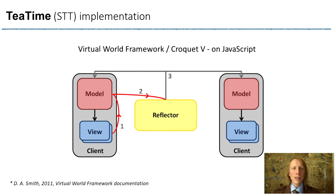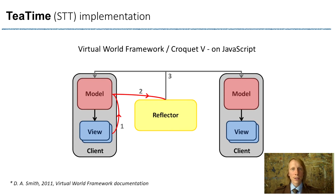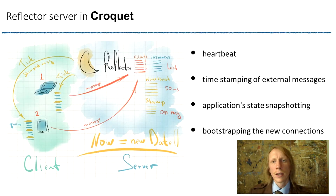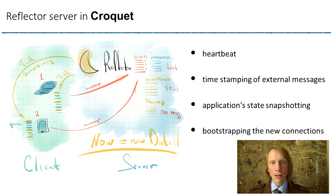While being a tiny or even a micro server, it remains to be a server. If a reflector server crashes and becomes unavailable, the clients lose any connection. Moreover, the reflector server is not only used for sending heartbeat messages, stamping, and reflecting external messages, but is also used for holding a list of connected clients. It stores application snapshots, and a list of virtual world instances.